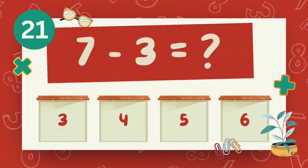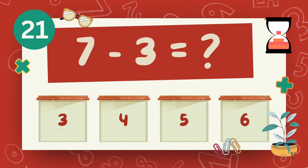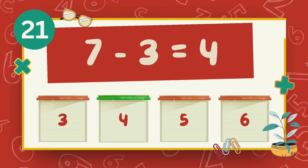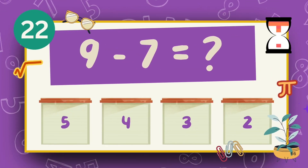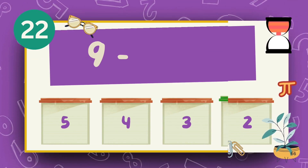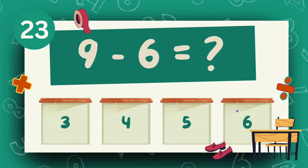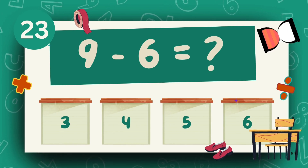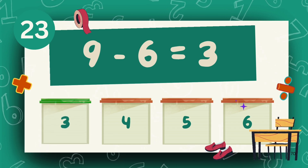What is 7 minus 3? The answer is 4. What is 9 minus 7? The answer is 2. What is 9 minus 6? The answer is 3.